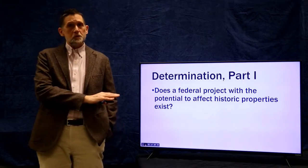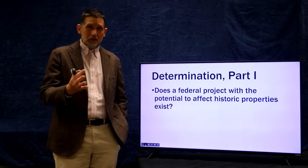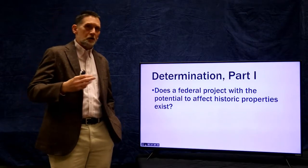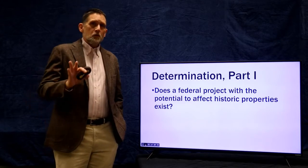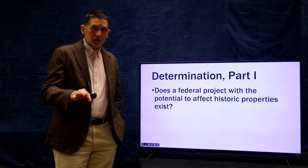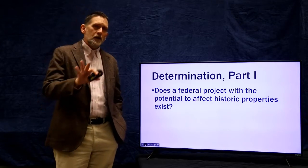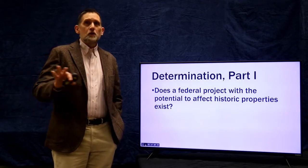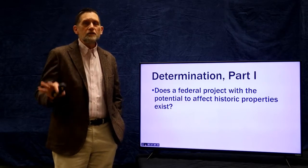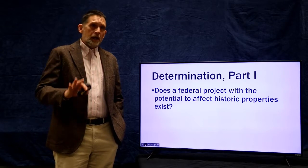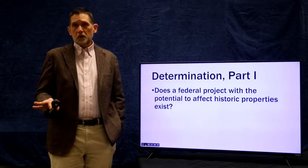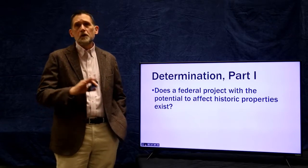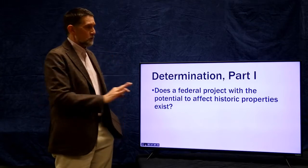The first thing to do under Section 106 is to determine if there's a federal project going on at all. Those projects are typically called undertakings. Federal undertakings are defined by having federal involvement. As we've talked about before, the federal government has pretty long-reaching arms. A federal undertaking includes anything that has any involvement by the federal government — certainly things funded by the federal government, activities the federal government is doing on military bases, airports, or highways.